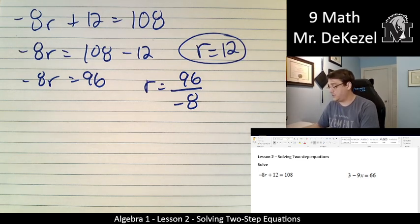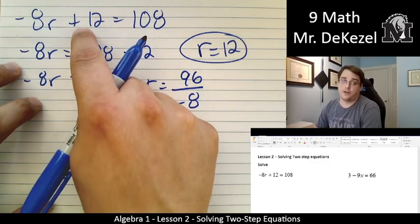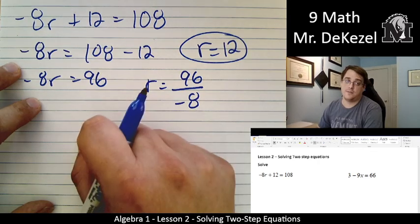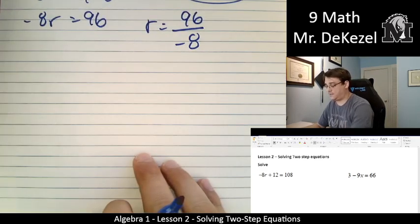Yes, it is definitely 12. Okay, so we moved the plus 12 over. We subtracted it from the other side. We divided the minus 8 onto the other side because it was multiplied. Let's do the next problem.